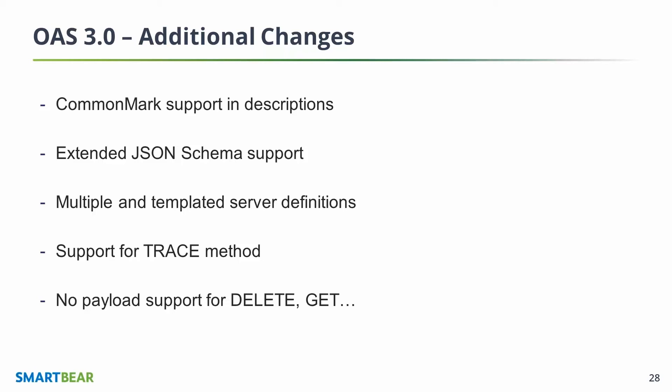Extending JSON Schema support is actually a huge thing, but in short we added support for anyOf, oneOf, and not. We still don't support null as a value, but we did introduce a new construct to say that something is nullable, so you can still specify that it can have a null value.